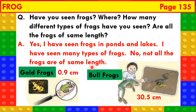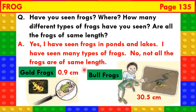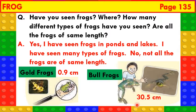In your textbook, two types of frogs are shown: gold frog and bull frog. The gold frog is the smallest in the world. Its length is only 0.9 centimetres, that is 9 millimetres. The bull frog is the biggest frog. Its length is 30.5 centimetres. Such a vast difference — smallest frog of 0.9 centimetres, whereas the biggest frog is 30.5 centimetres.